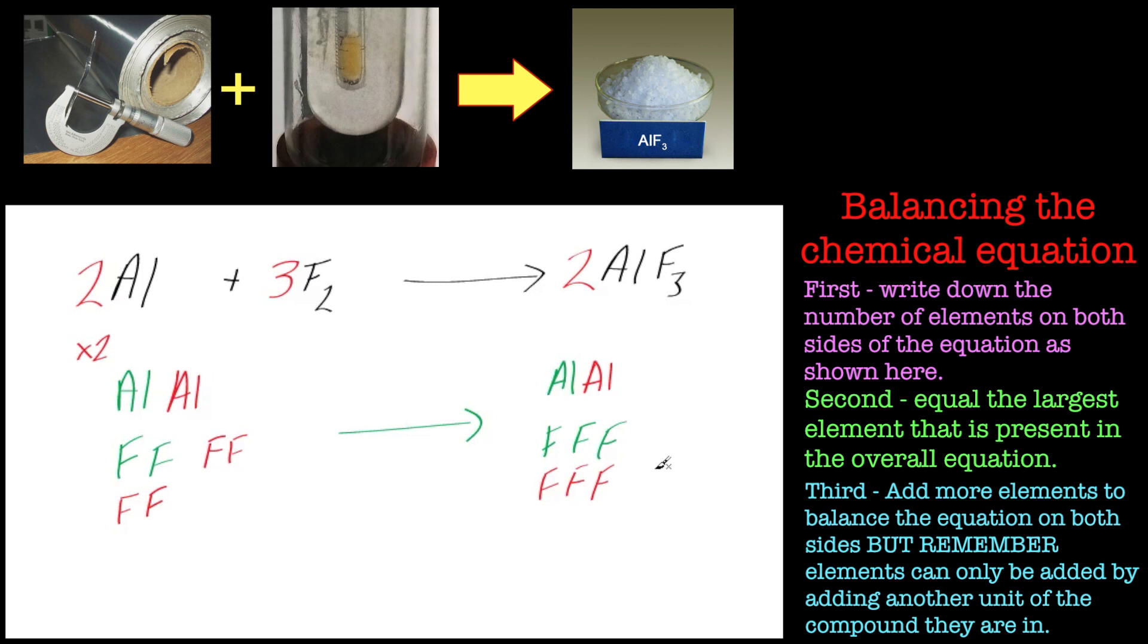So very quickly we balanced that equation. Give that a tick, give that a tick, give that a tick. So you see how easy it was? Even if you might have worked that out in your head that it was a fraction, multiply it by two gets a whole number, and we can very quickly balance that equation using this method as well. So that's one example with aluminum.